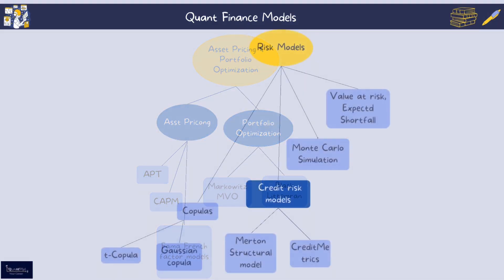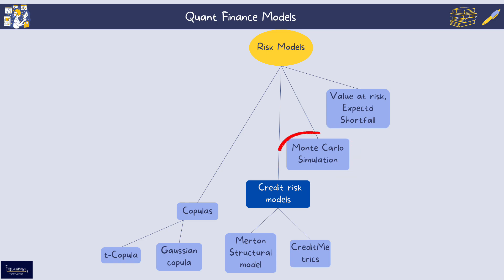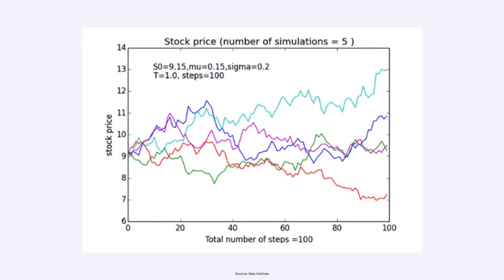Now for an overview of risk models. Monte Carlo simulation is a method that uses random sampling to model the probability of different outcomes in a process that is difficult to predict analytically. It's widely used in finance for pricing complex derivatives, simulating portfolio risk under various market scenarios, and allows practitioners to estimate expected values, distributions, and risk measures by generating thousands of hypothetical future paths.